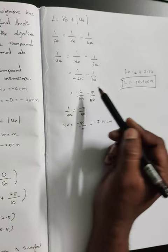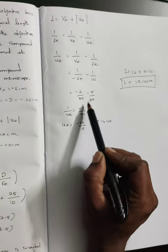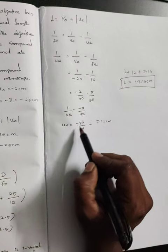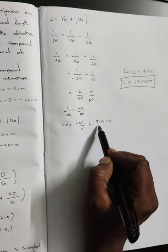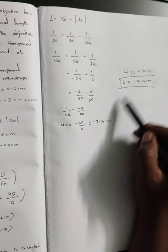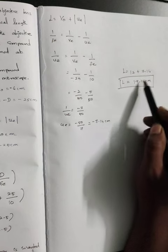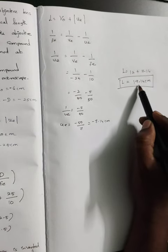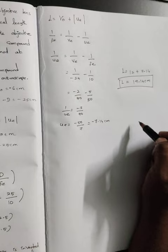After calculation, UE is minus 7.14. I don't consider the minus because the actual formula uses modulus. L equals 12 plus 7.14, so the final answer is L equals 19.14 cm. Thank you.